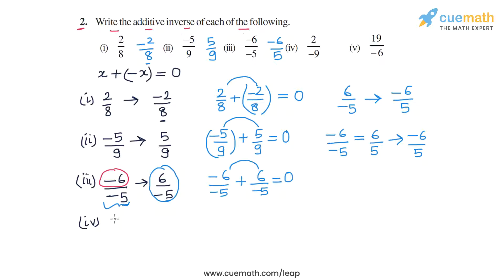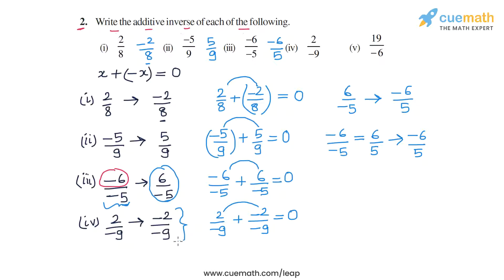In part 4, the number is 2 by minus 9. To take the negative, we invert the sign of the numerator, giving us minus 2 by minus 9. We can check: 2 by minus 9 plus minus 2 by minus 9 gives numerators that add to 0. Now, minus 2 by minus 9 can be written more simply by cancelling the negative signs from both numerator and denominator, giving us 2 by 9. So the additive inverse of 2 by minus 9 is 2 by 9.